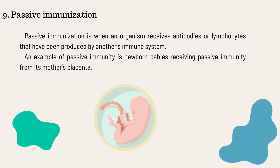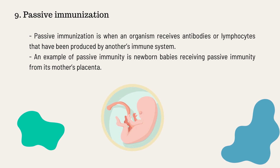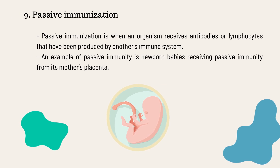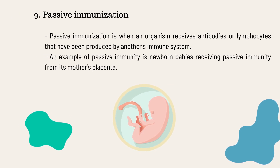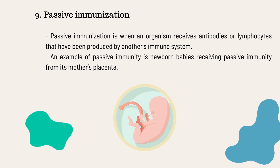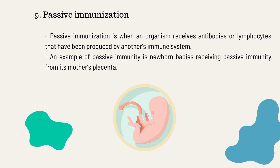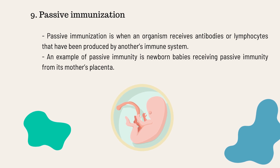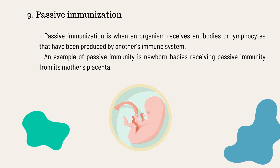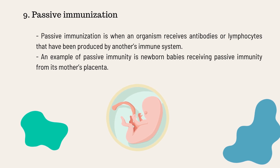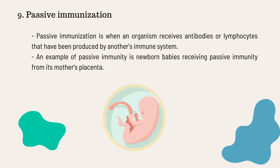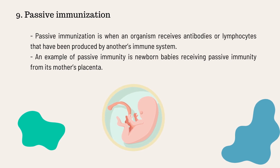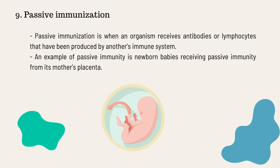The ninth type of vaccine is passive immunization. It is when an organism receives antibodies or lymphocytes that have been produced by another organism's immune system. A prime example of this is newborn babies receiving passive immunity through their mother's placenta.